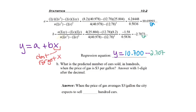What is the predicted number of cars sold in hundreds when the price of gas is $3 per gallon? Answer with one digit after the decimal. Okay, so I'm going to take my regression model and plug a 3 in for X because X is the price of gas.